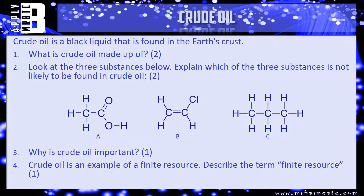There are four questions. It starts off by saying: crude oil is a black liquid that is found in the earth's crust. Question one: what is crude oil made up of? Put two things down — that's going to get you two marks. Question two: look at the three substances below. Explain which of these three substances is not likely to be found in crude oil. Which one — A, B, or C — is not going to be in crude oil, and why?